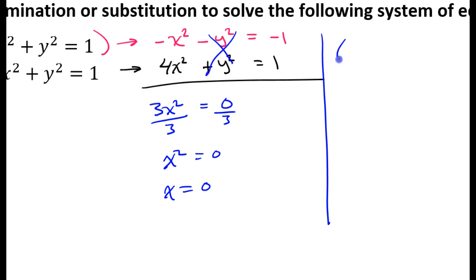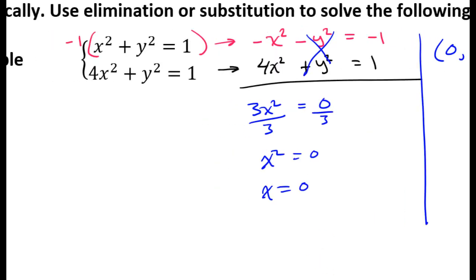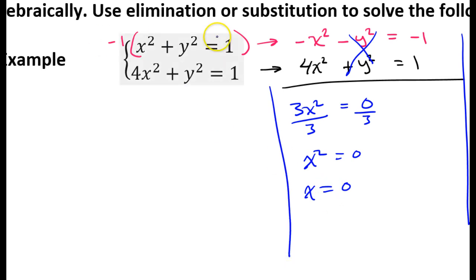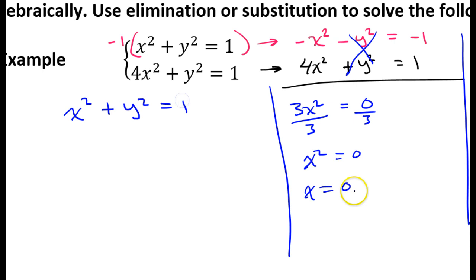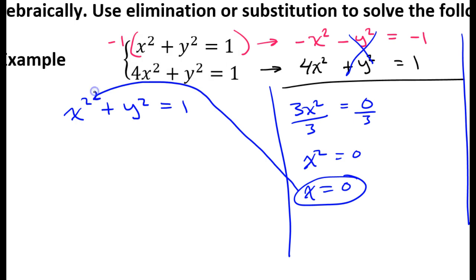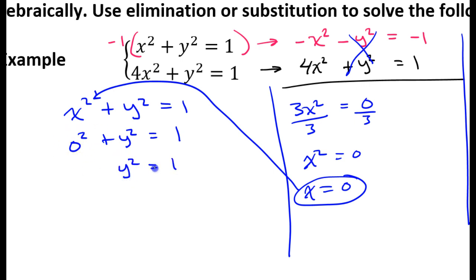As I build my solution set, I have an x-value of 0, but I still need the y-value. I'll take the x-value and plug it into the top equation, x-squared plus y-squared equals 1. If x equals 0, then 0-squared plus y-squared equals 1, which simplifies to y-squared equals 1. Taking the square root of both sides gives y equals plus or minus 1.